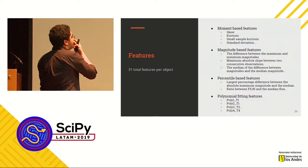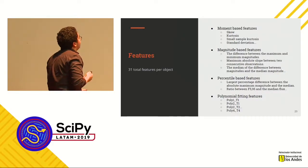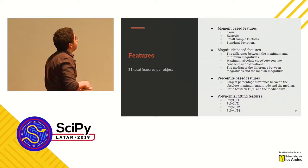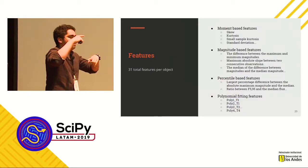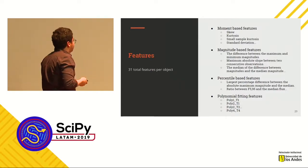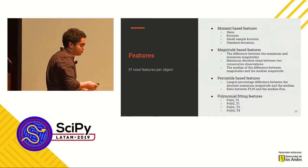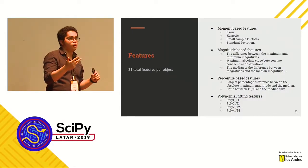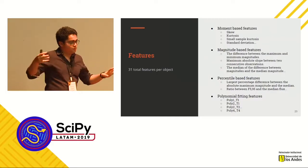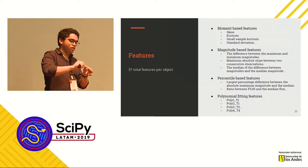These are all the features we were able to extract — 31 features in basically four types. There are moment-based features: skewness, kurtosis, standard deviation, etc. There are magnitude-based features: the difference between maximum and minimum magnitude, average magnitude. There are percentile-based features, such as the largest percentage difference between the absolute maximum magnitude and the median. And then there are polynomial fitting features, which were actually really useful — we fitted polynomials of degree one, two, three, and four to the light curve, and the coefficients from those fits were fed to the algorithm so it could model the temporal evolution of the light curve.